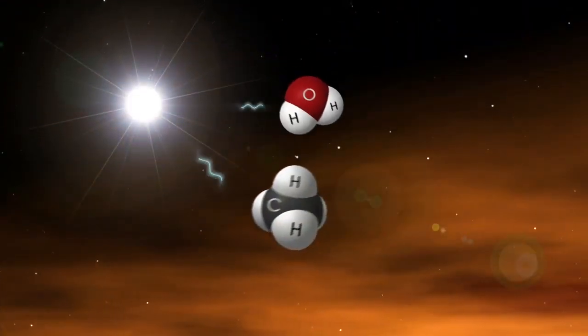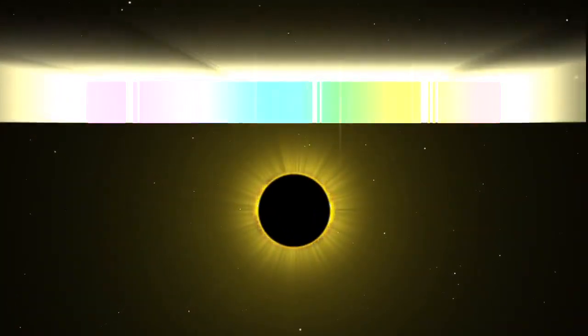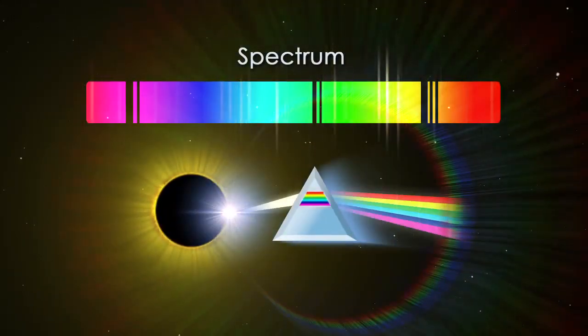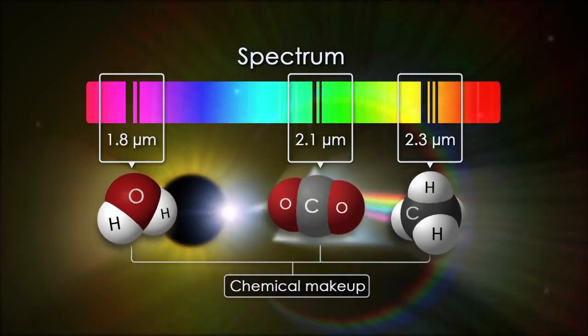Because each molecule absorbs distinct wavelengths, astronomers spread the star's light into its spectrum of colors to see which wavelengths have been absorbed. The dark absorption bands act as molecular fingerprints, revealing the atmosphere's chemical makeup.